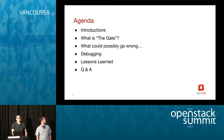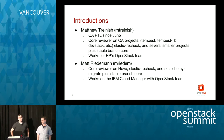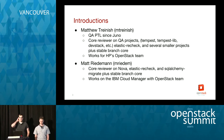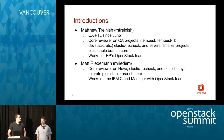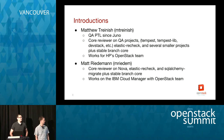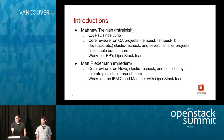A little bit about ourselves: I'm the QA PTL — I've been in that position since Juno, continue to get elected unopposed. I'm a core reviewer on a bunch of projects including all of the QA projects, and I work for HP on their OpenStack upstream team. I am a core reviewer on Nova and elastic recheck, also stable branch core. I work for IBM on the IBM Cloud Manager with OpenStack team, about two and a half years now. I initially got involved with packaging; we had a CI system running Tempest, and when I had issues I got talking to people in the QA channel, and that's how I got roped into working on some of this.